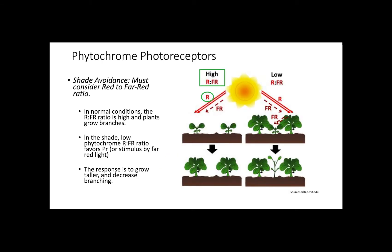Similarly to seed germination, phytochromes control shade avoidance, but in this case it is important to consider the red to far red light ratio, as plants will be unavoidably exposed to both wavelengths during daylight. In normal conditions, the red to far red ratio is high, meaning there is plenty of red light available so that the response is to grow branches. In shaded conditions, for example if a tree is starting to grow in a forest and many older trees cause it to receive less sunlight, most of the light captured by this tree will be in the far red spectrum, and the phytochrome will shift to the PR form, causing the tree to allocate more resources to grow taller in search for more sunlight.